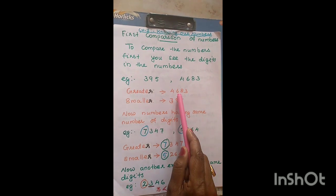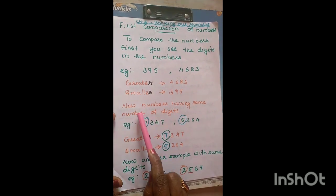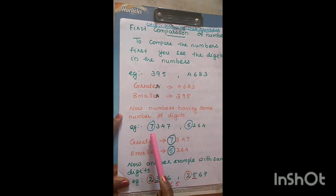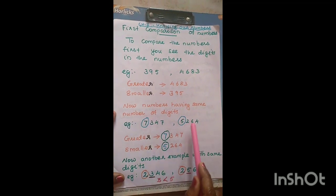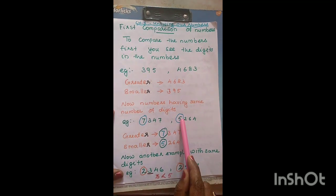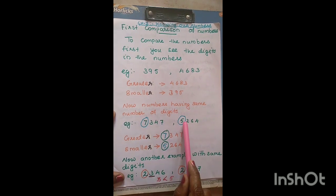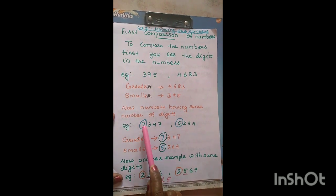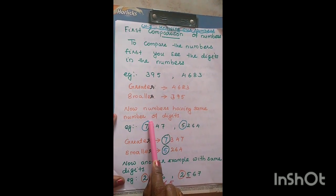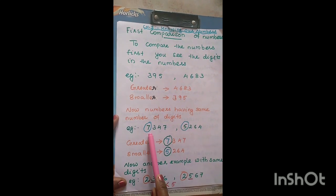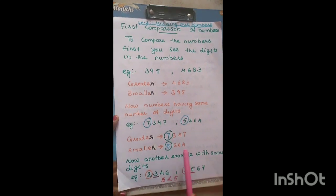So, the greater number is 4683 and the smaller number is 395. Now, if the numbers are having the same number of digits, what do we do? For example, 7347 and 5264 — both are having 4 digits. In this case, you have to compare the first digits, that is 7 and 5. Since 7 is greater, 7347 is the greater number and 5264 is the smaller number.